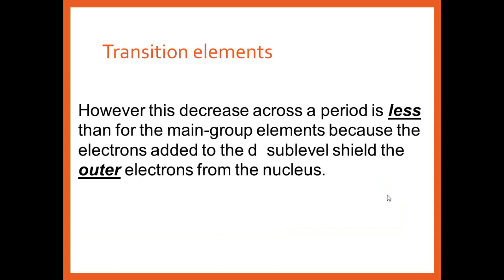Transition elements — you're going to see the same general trend. There's a little bit of blips, but we're not going to worry about the blips at this level. Just know you can look across the period and see them getting smaller, and going down a group they're going to be getting bigger. We won't stress a lot about what's going on with the D orbitals doing some different things.